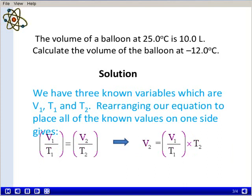We have three known variables, which are the initial volume, the initial temperature, and the final temperature. We need to rearrange our equation to place all of the known values on one side, so we can solve for our unknown variable, which is the final volume.